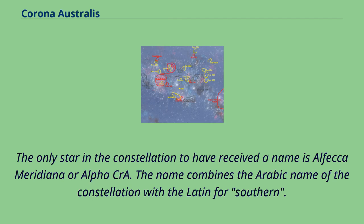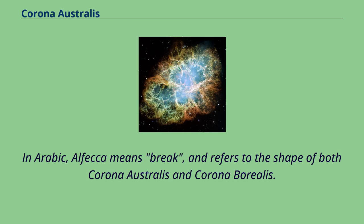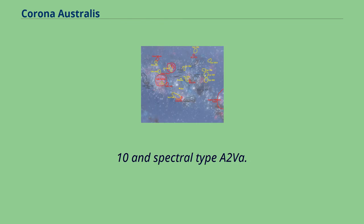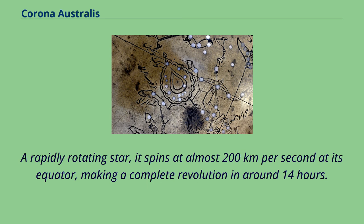The only star in the constellation to have received a name is Alfeca Meridiana, or Alphacra. The name combines the Arabic name of the constellation with the Latin for southern. In Arabic, Alfeca means break, and refers to the shape of both Corona Australis and Corona Borealis. Also called simply Meridiana, it is a white main sequence star located 125 light-years away from Earth, with an apparent magnitude of 4.10 and a spectral type A2V. A rapidly rotating star, it spins at almost 200 kilometers per second at its equator, making a complete revolution in around 14 hours.